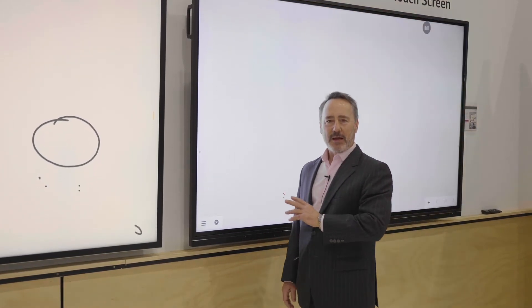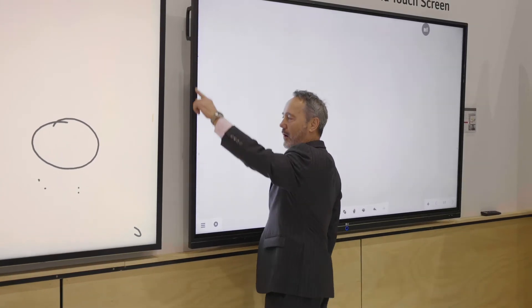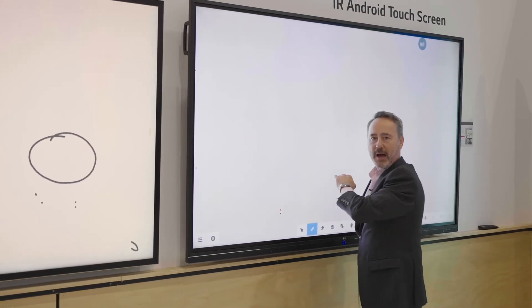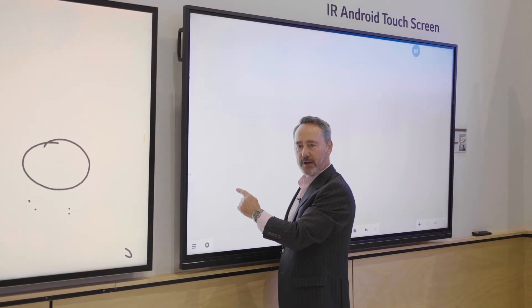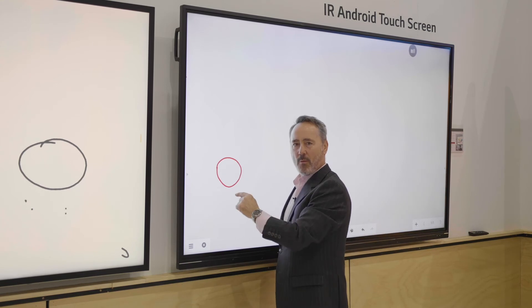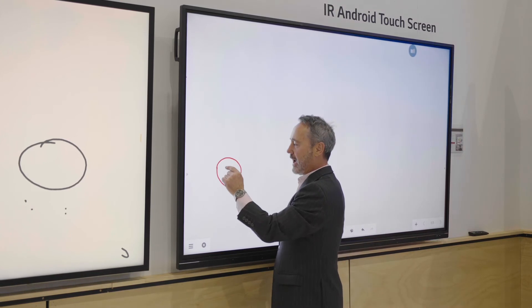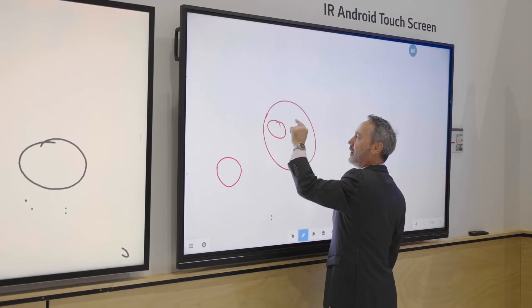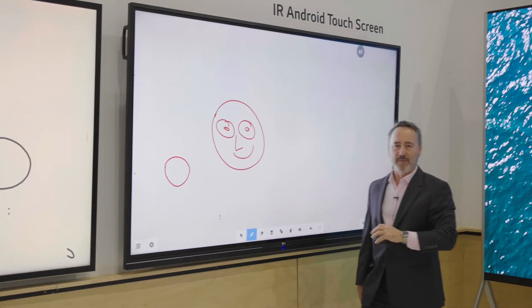This interactive screen is based on IR. You have IR being shot across the screen in a grid pattern, which works out the location of where your finger or pen is, and it's able to then recreate what you're creating with your finger on the screen using that IR grid. This gives you a great capability to create material or content via that interactive touch.